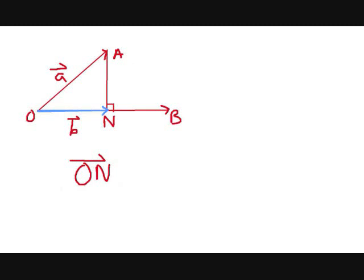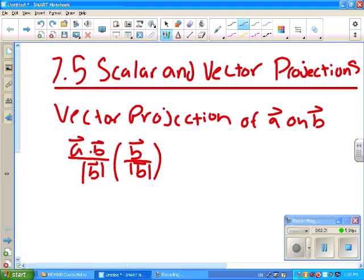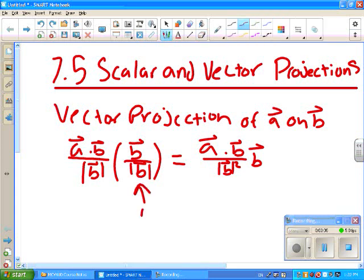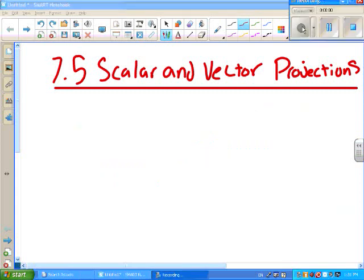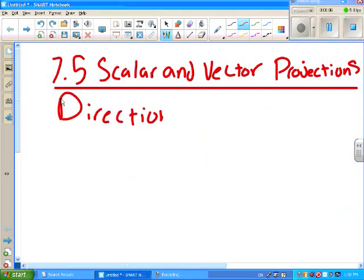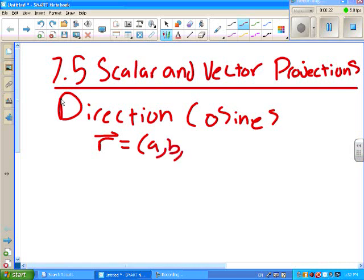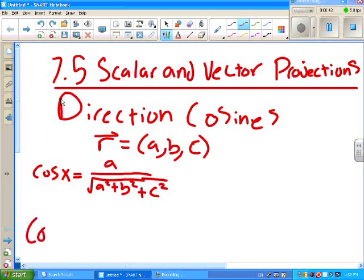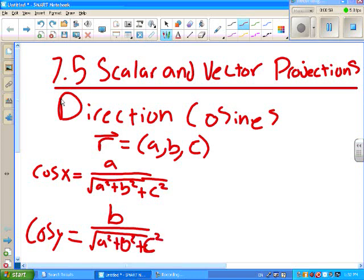Vector projection is very similar to scalar projection. The only difference is that you take the scalar projection equation and multiply it by a unit vector in the direction of vector B for the vector projection of A onto B. A final topic is direction cosines. The direction cosines are the angles that a vector makes with the x, y, and z axis. These equations are all very similar. The only thing that changes is the component you're solving for.